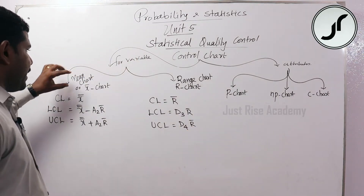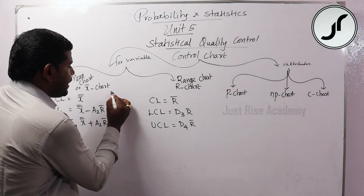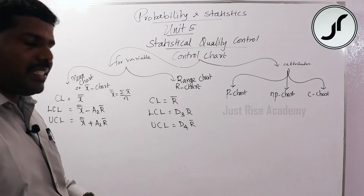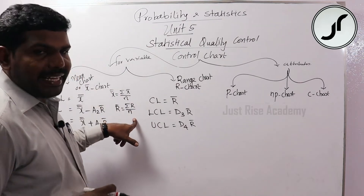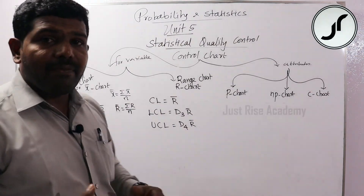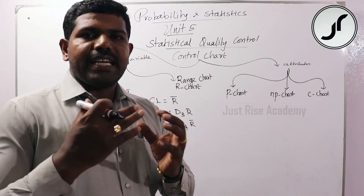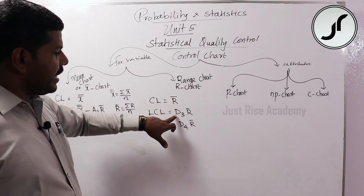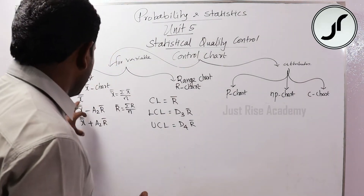X-double-bar is calculated as the sum of all X-bar values divided by n, the number of samples. R-bar is calculated as sigma R divided by n. The constants A2, D3, and D4 are obtained from the statistical control chart table, which is provided during the university examination. Different values apply for different sample sizes.